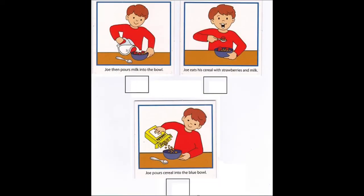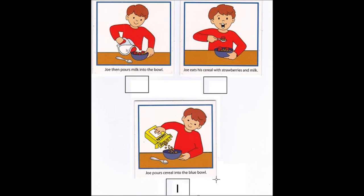So let's take another example. Here we see a little boy getting ready to eat breakfast, and we want to put the pictures in order. Let's read the sentences below the pictures: Joe then pours milk into the bowl. Joe eats his cereal with strawberries and milk. Joe pours cereal into the blue bowl. So where do you think we put number one? Number one would go here, where Joe pours cereal into the blue bowl.